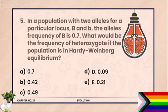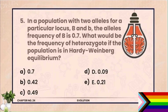MCQ 5. In a population with two alleles for a particular locus, B and b, the allele frequency of B is 0.7. What would be the frequency of heterozygotes if the population is in Hardy-Weinberg equilibrium? If B = 0.7, then b = 0.3. In the binomial expansion P² + 2Pq + Q², the 2Pq represents heterozygotes. So 2 × 0.7 × 0.3 = 0.42. The correct option is 0.42 (beta).